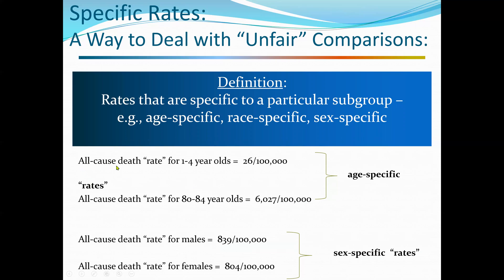For example, the all-cause death rate for ages 1 to 4 is 26 per 100,000, while for ages 80 to 84 it is 6,027 per 100,000. This illustrates age-specific rates: younger people between ages 1–4 have only 26 deaths per 100,000, while those aged 80–84 have over 6,000 per 100,000. We also have sex-specific rates: the all-cause death rate for males is 839 per 100,000, while for females it is 804 per 100,000, meaning slightly more males die than females.